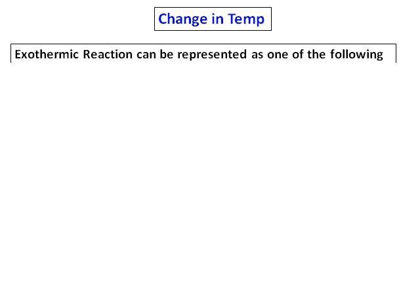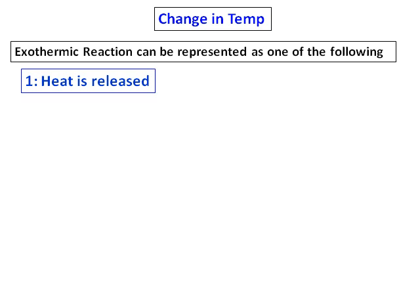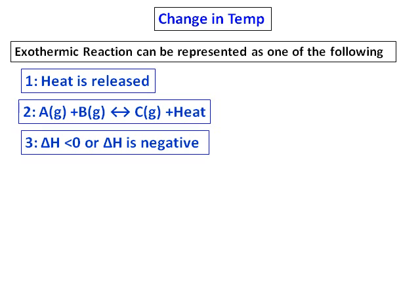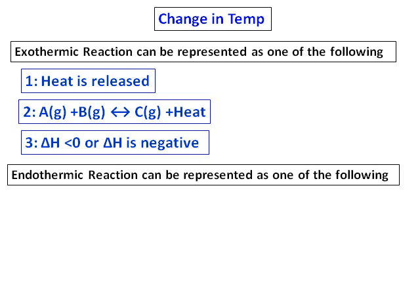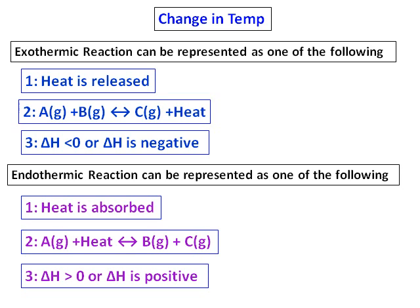The third change to learn is how change in temperature affects an equilibrium. Before that, let us know the symbols for exothermic and endothermic reactions. An exothermic reaction can be represented in three ways: heat is released, plus heat is added to the product side, or delta H is negative. An endothermic reaction is the opposite — heat is absorbed, heat is added to the reactant side, or delta H is positive.